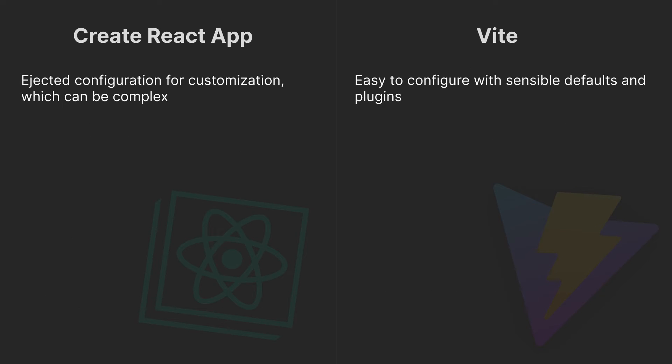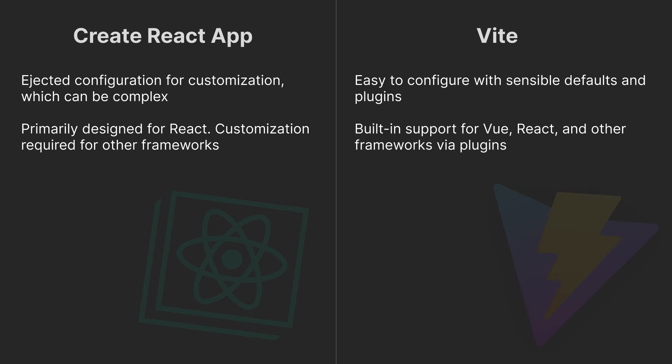Create React App has an ejected configuration for customization, which can be complex and is hard to un-eject, while Vite is easy to configure with sensible defaults and plugins.